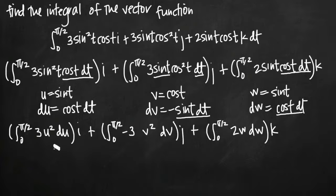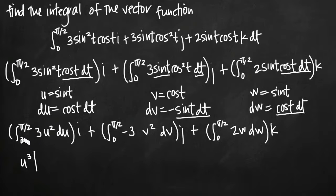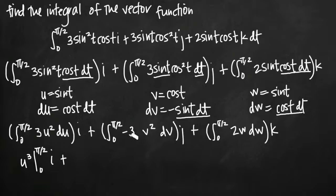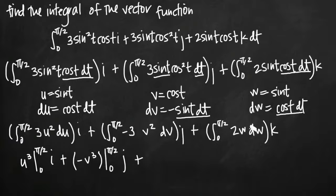Now we evaluate our integrals. The integral of 3u squared is u cubed, evaluated from 0 to pi over 2, multiplied by i. The integral of negative 3v squared is negative v cubed, evaluated from 0 to pi over 2, multiplied by j. The integral of 2w is w squared, evaluated from 0 to pi over 2, multiplied by k.